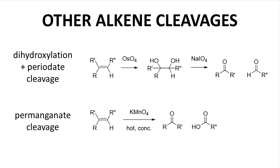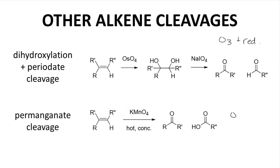There are other methods to oxidatively cleave an alkene. The top reaction is a two-step process: first, oxidize an alkene to a diol with osmium tetroxide, then cleave the diol with periodate. The products of this reaction depend on the substitution of the alkene, but are the same as ozonolysis with a reductive workup — either ketones and/or aldehydes. The bottom is a one-step process performed with potassium permanganate, and the products — ketones and/or carboxylic acids — are the same as ozonolysis with an oxidative workup.